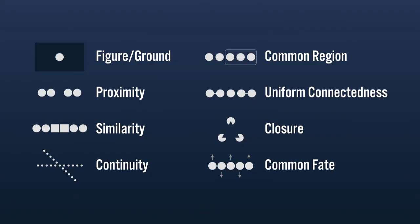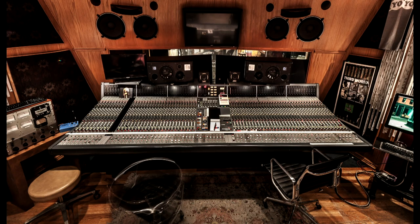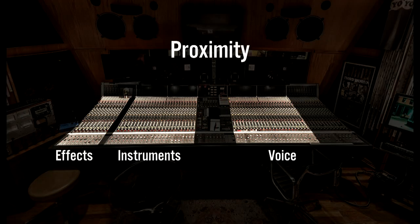That brings us to the Gestalt Principles. Over a hundred years ago, Gestalt psychologists sought to understand how our brains form a whole picture from individual pieces we see, and those principles are still used by designers today to establish relationships between elements in an interface. It's easier to understand in practice by looking at a real interface. Tom's console has controls for different kinds of recordings organized into groups, with physical distance between those groups — this is a good example of the proximity principle. When you put elements close to one another they appear to form groups; spacing elements apart shows they're different.